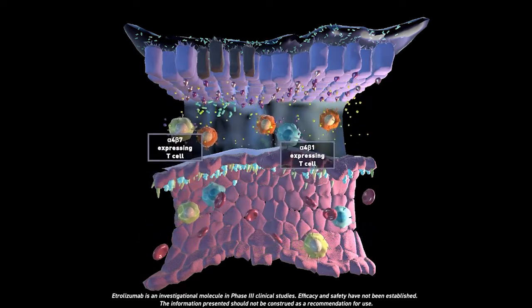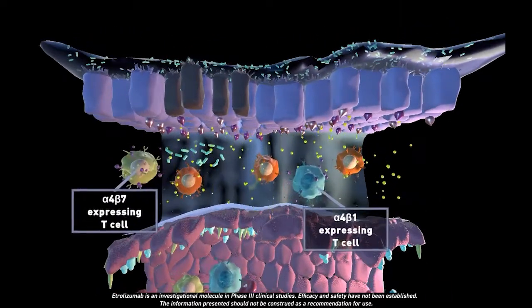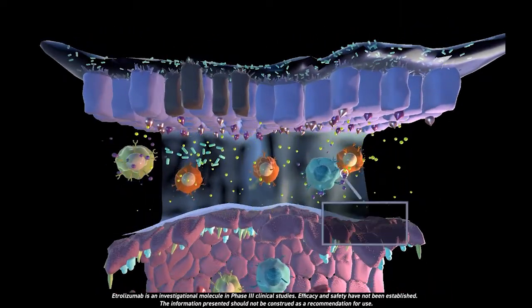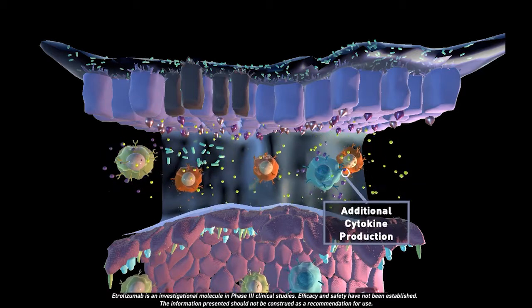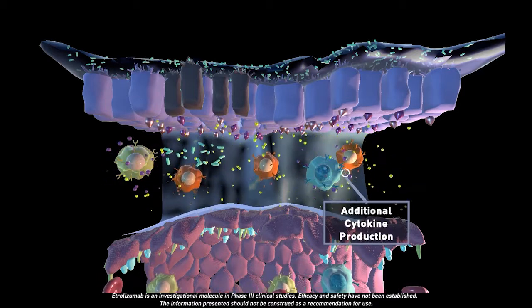This permits migration into the lamina propria. Pro-inflammatory cytokines activate these T cells, resulting in additional cytokine production, further propagating the immune response.